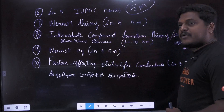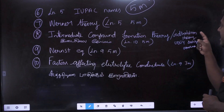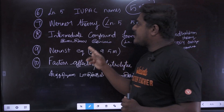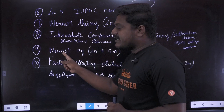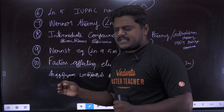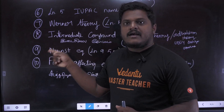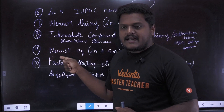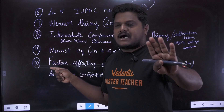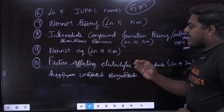Intermediate compound formation theory — that is the topic. The ultimate question in the definition of that example is the factors affecting electrolytic conductance.